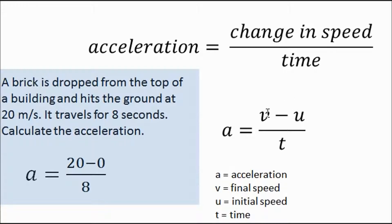So 20 minus 0. 20 minus nothing. That's 20. Do we know T? Do we know the time it took? Yes, we do. It travels for 8 seconds. So it's 20 over 8. 8 into 20 goes 2.5. 2.5 meters per second squared. This means this brick got 2.5 meters per second faster every second.